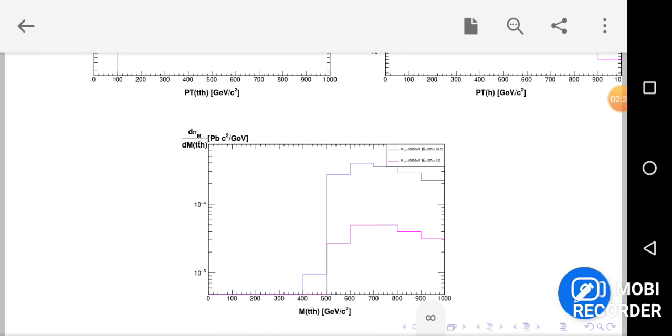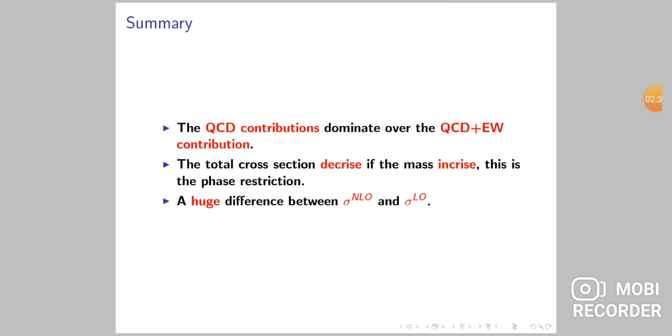In summary, we observe that the QCD contributions dominate over the QCD plus electroweak contribution. The total cross-section decreases if the mass increases. This is the phase space restriction. A huge difference between cross-section LO and NLO.